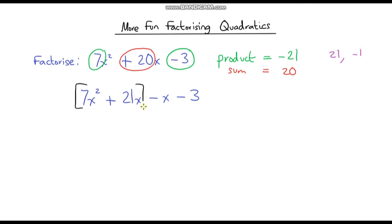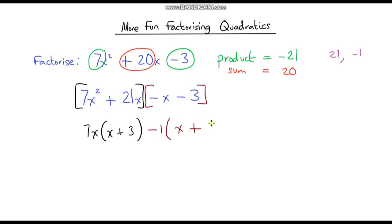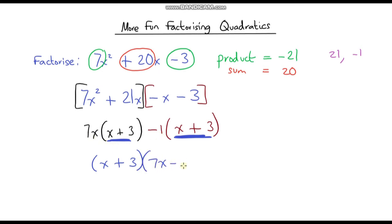Breaking the expression into two parts: focusing on the black part, I can factor out a 7x, leaving x plus 3 in the brackets. Then looking at the maroon part, I can factor out a negative 1, leaving x plus 3. Since both terms have x plus 3, I can factor that out, giving x plus 3 times 7x minus 1, and we're done.